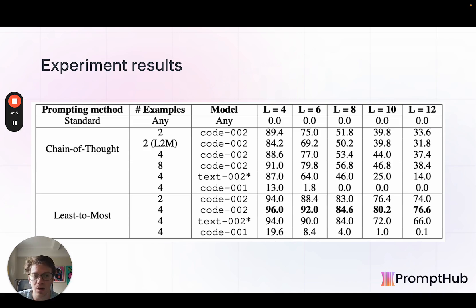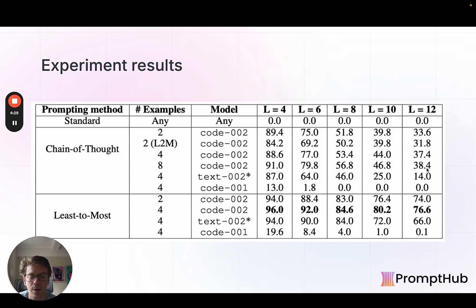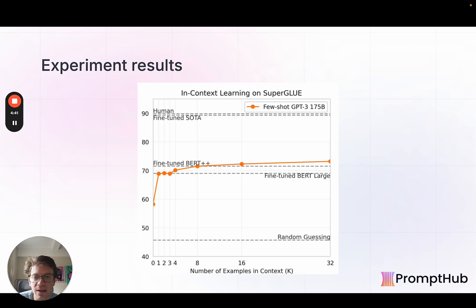Something interesting: for chain-of-thought at four examples, we're at 37.8, and at eight examples we're at 38.4. This goes back to something we talk about sometimes — the number of examples included in a prompt versus performance starts to plateau at a certain point, and you're seeing that here. This is referenced in our few-shot prompting guide, which will be linked below.